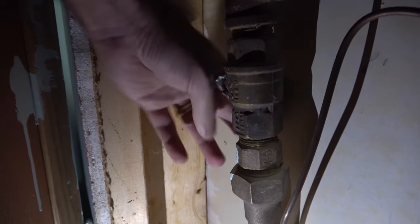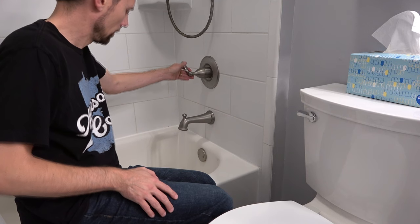Now you can go turn the water main back on and see if your new faucet works without dripping.